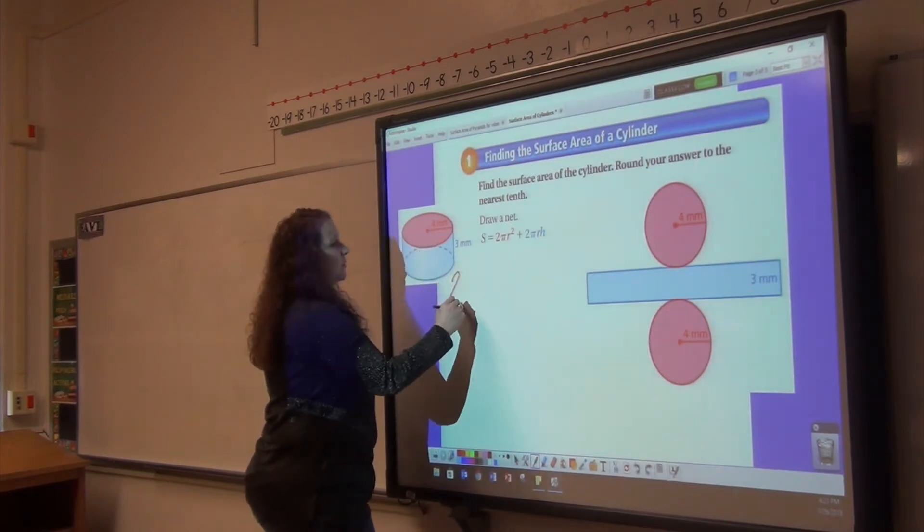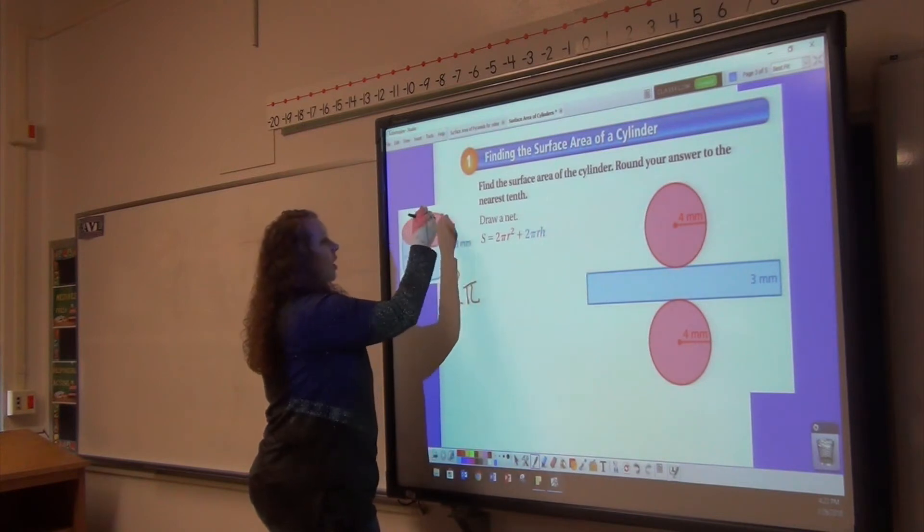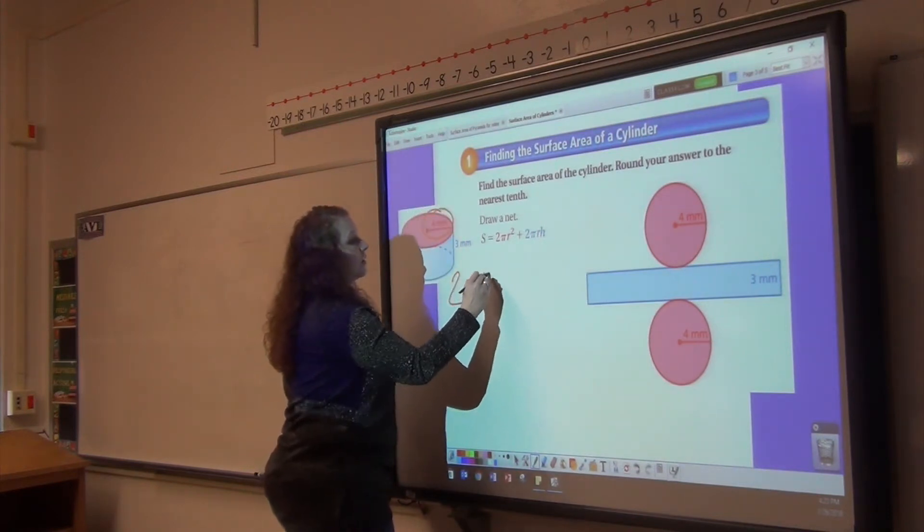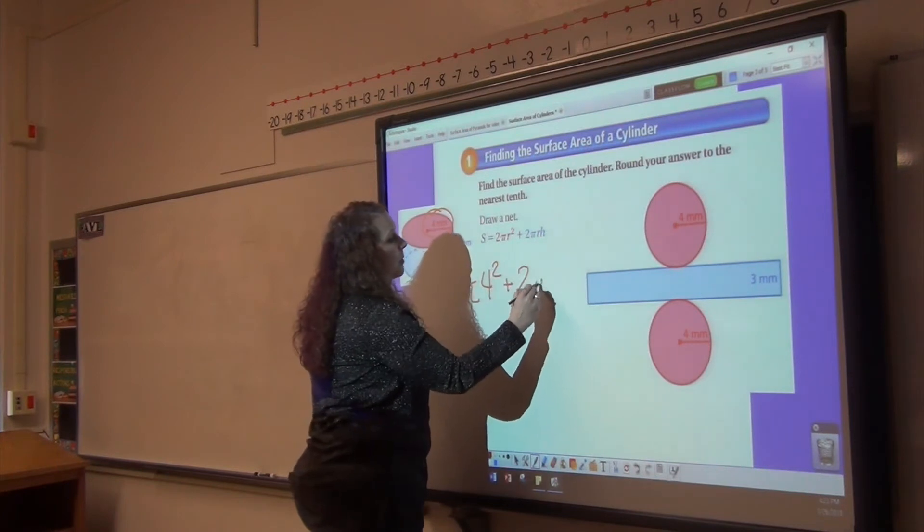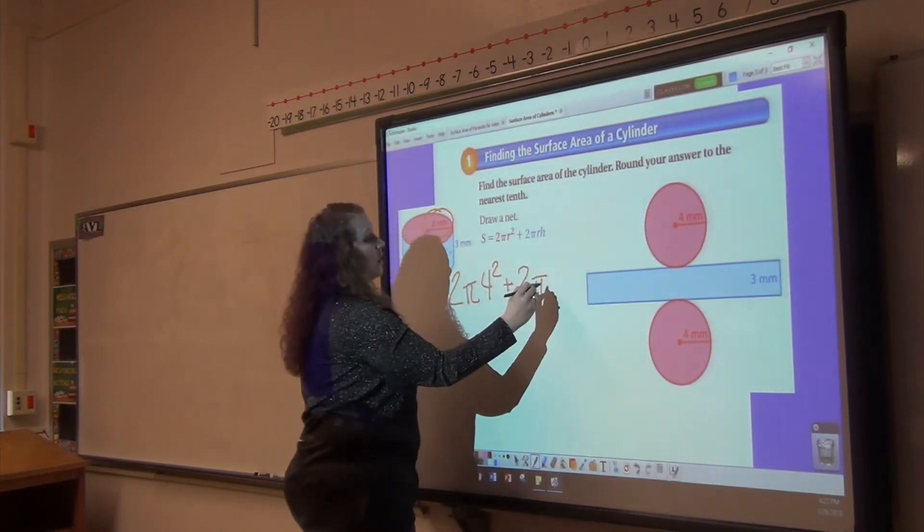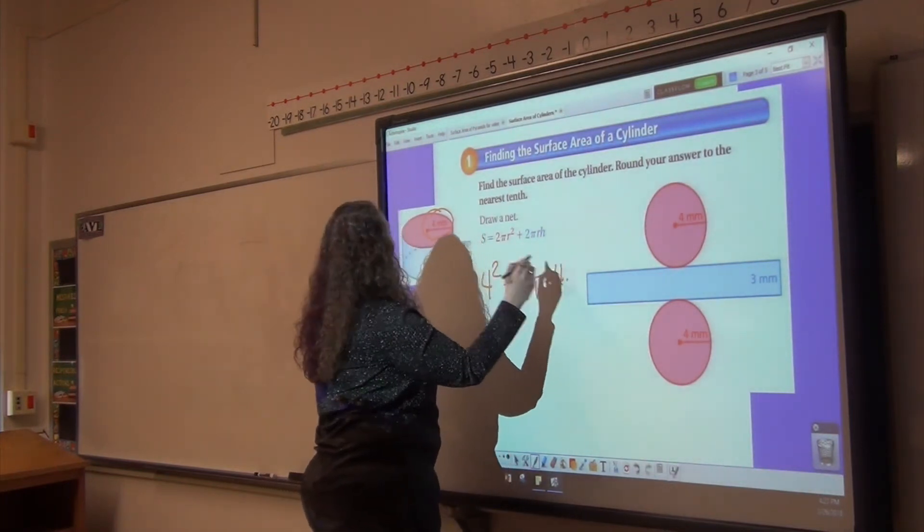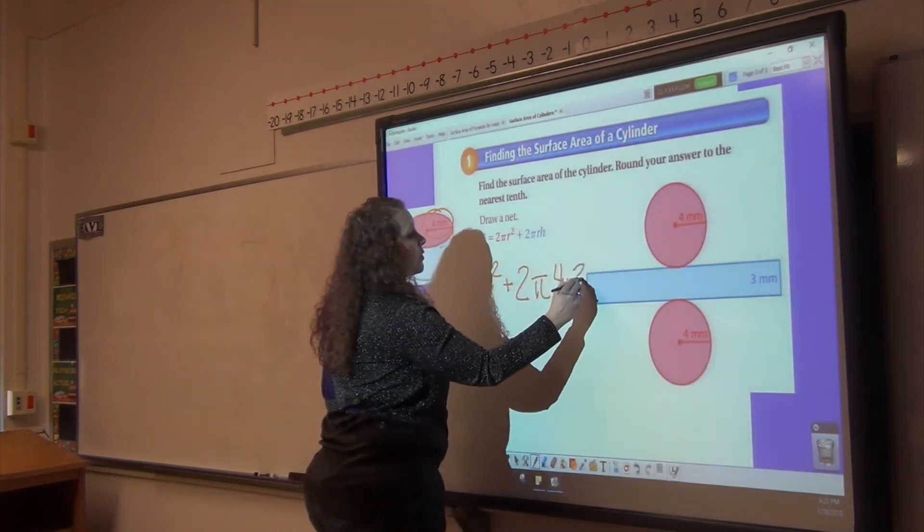Let's substitute those into the equation and see what we find. 2πr, r is 4, squared, plus 2πr, r is 4, times the height, which is 3.